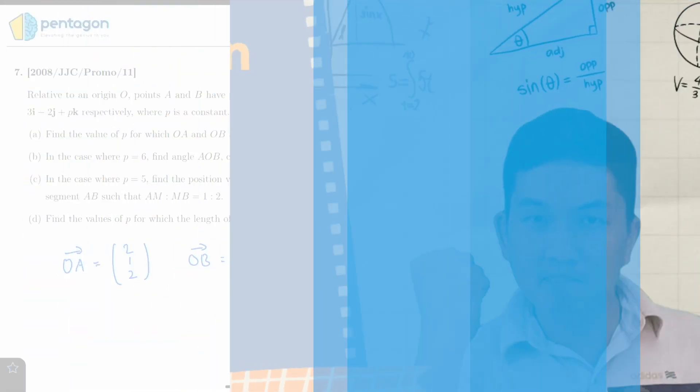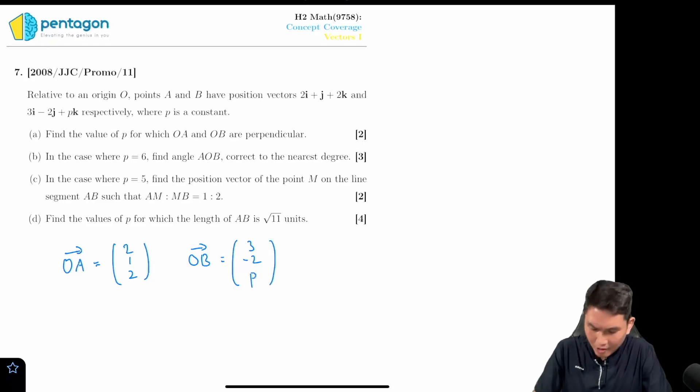Welcome back. Over here I've written down the column vector form of OA and OB. Part a says to find the value of p. p is the k element of vector OB for the case where OA and OB are perpendicular.